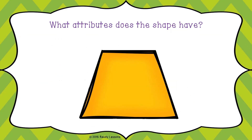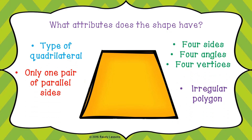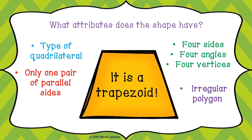How about this? Are you familiar with this shape? It is a trapezoid or trapezium. Trapezoid is a type of quadrilateral. It has four sides, four angles, four vertices, and this shape is an example of a regular polygon.